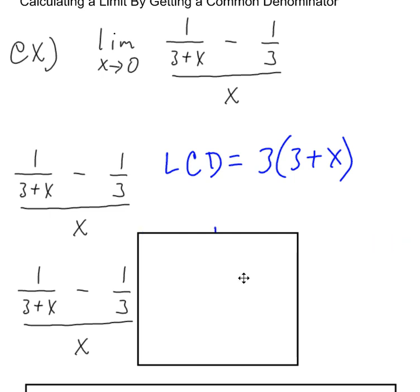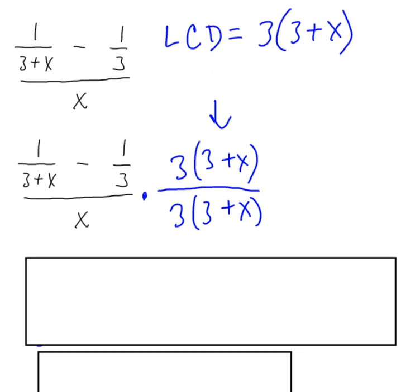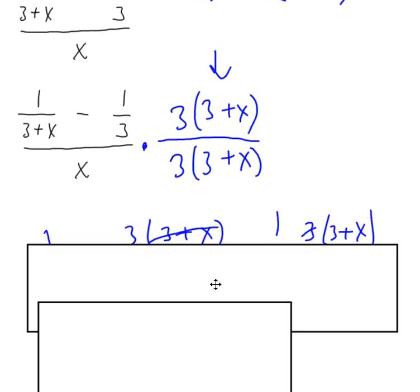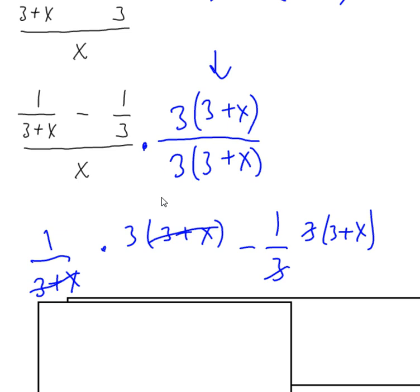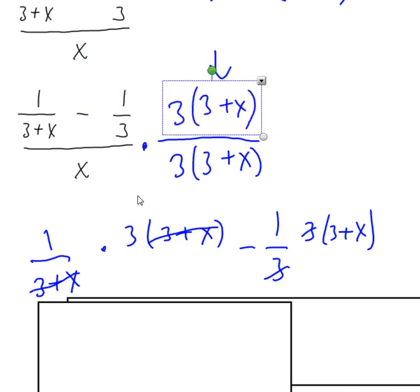Okay, so what I'm going to do is now multiply this entire big rational expression by a form of one, because I don't want to change the value. So I just use that denominator twice. Now what I'm going to have to do is I'm going to have to do some distributing in the numerator. Okay, so I'm going to distribute this whole term here into each of those terms in the numerator. And I wrote that out here.